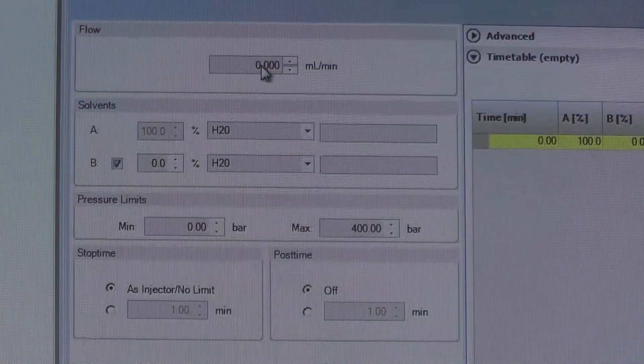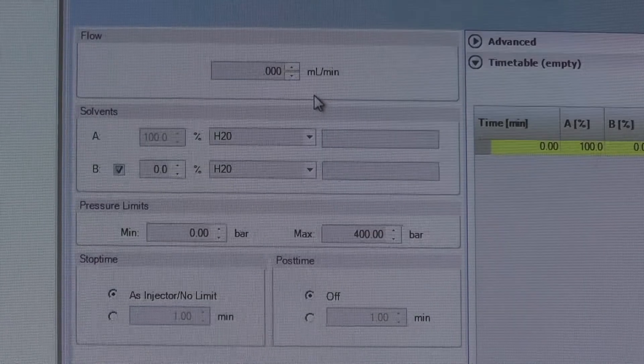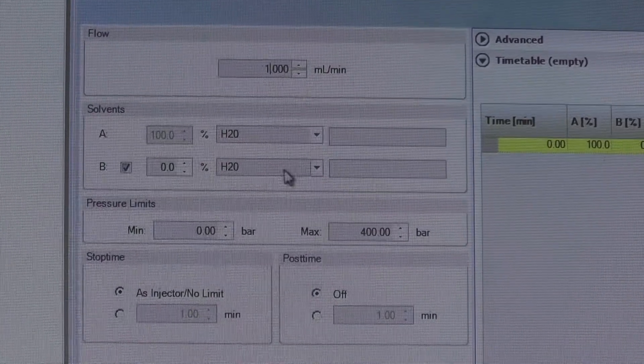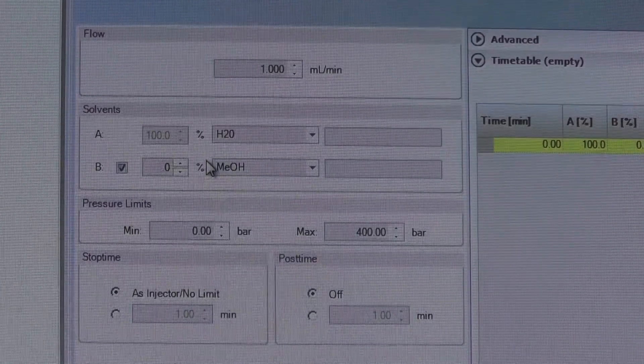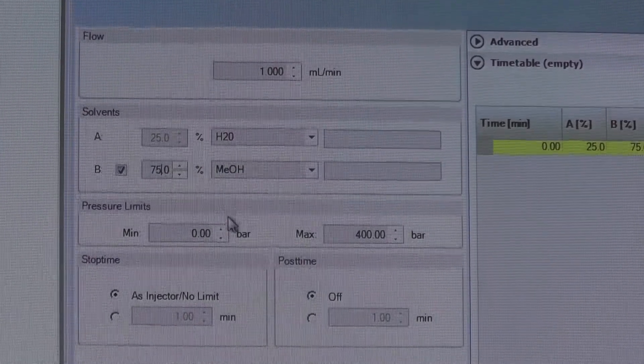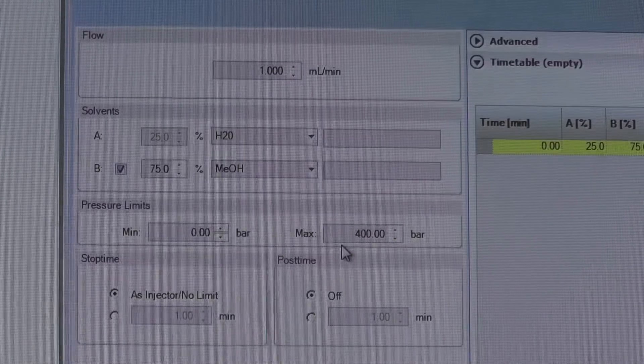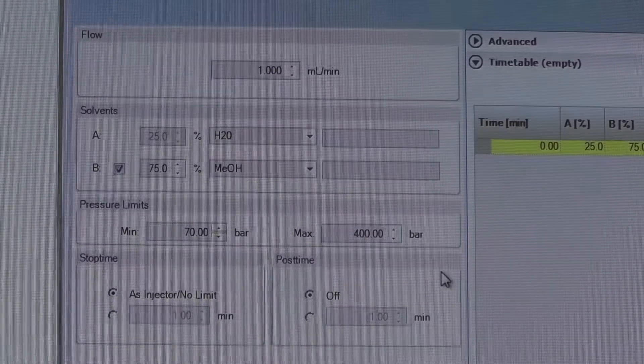A binary pump setup window will show up next. Change the flow rate and the solvent gradient according to your experiment. You can also change the minimum pressure limit to 70 bar or based on your own needs in order to detect leak in the system.